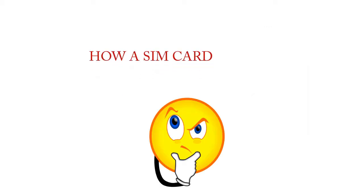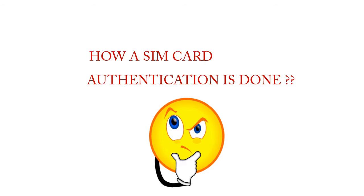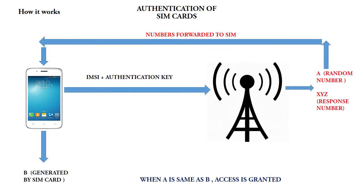Let's talk about how SIM card authentication is done. When you turn on your phone, your phone sends the IMSI ID number along with the authentication key to the cell network provider. The network generates a random number A and signs it with the authentication key to create response number XYZ. At the same time, the phone receives A and forwards it to the SIM card.